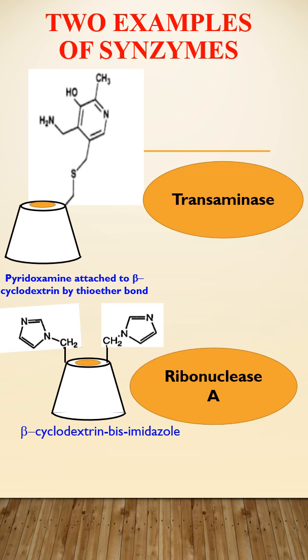Cyclodextrins are cap structures with a hydrophilic exterior but a hydrophobic interior. Pyridoxamine attached to beta-cyclodextrin shows transaminase activity, whereas beta-cyclodextrin bound to imidazole shows ribonuclease activity.